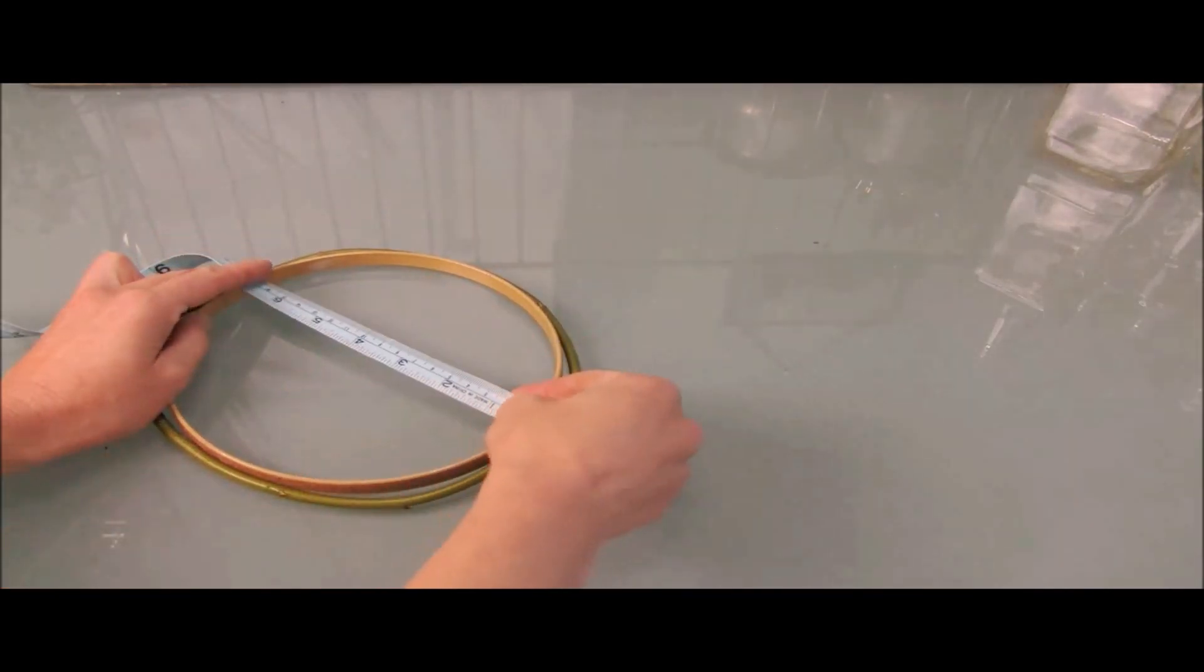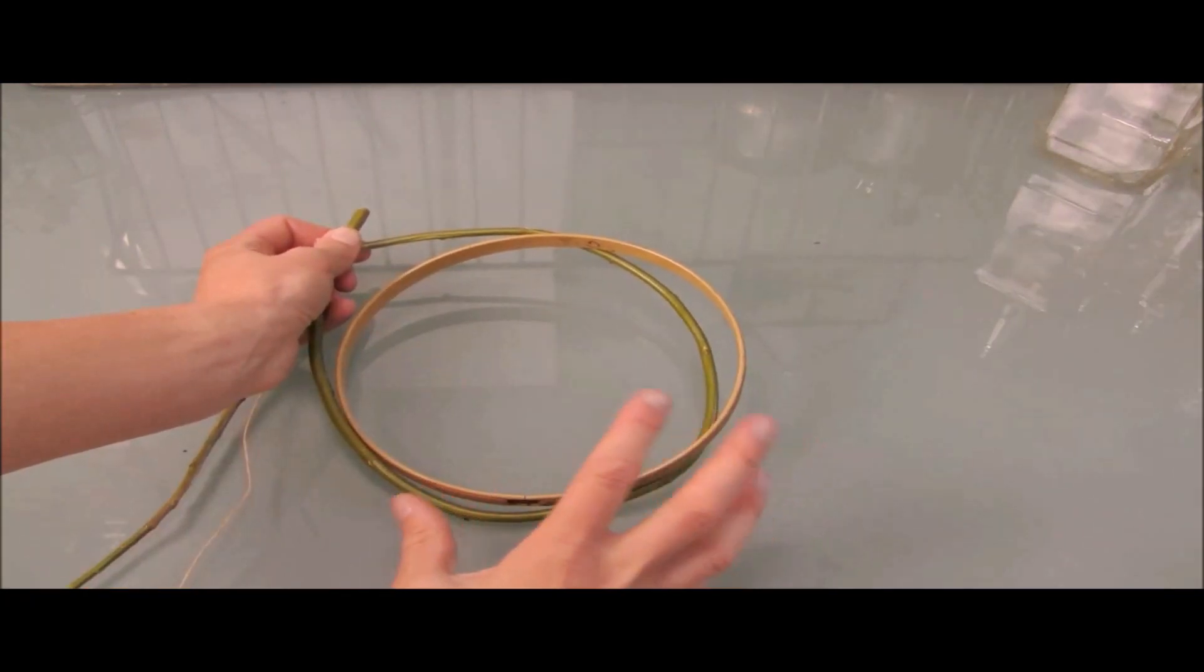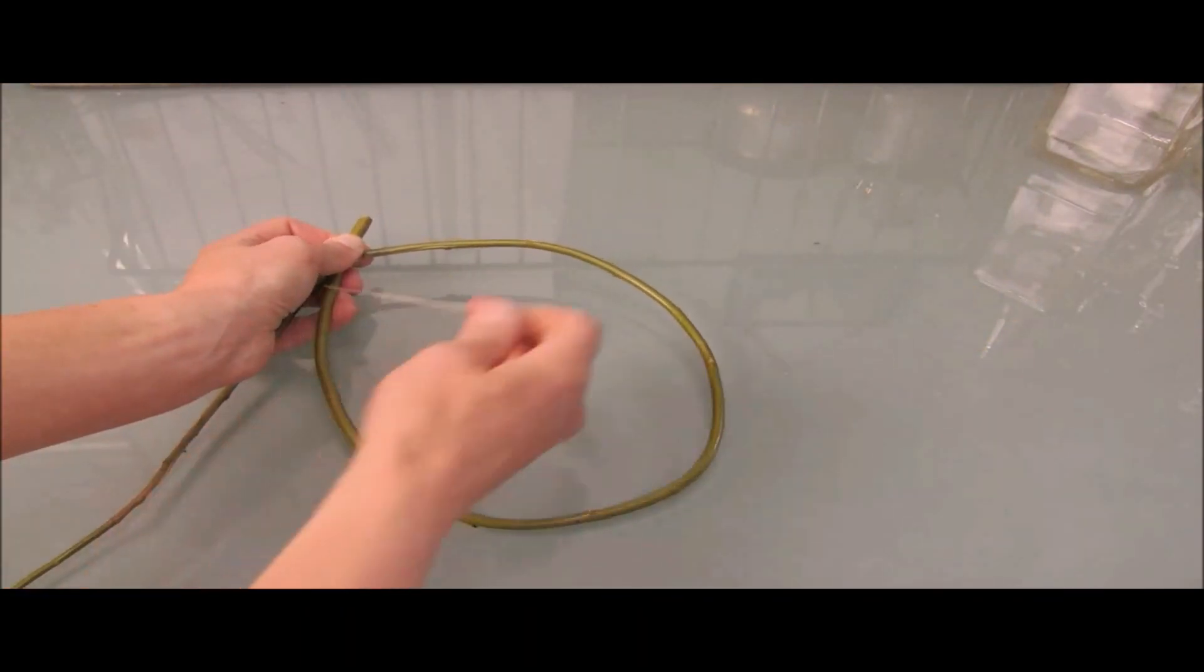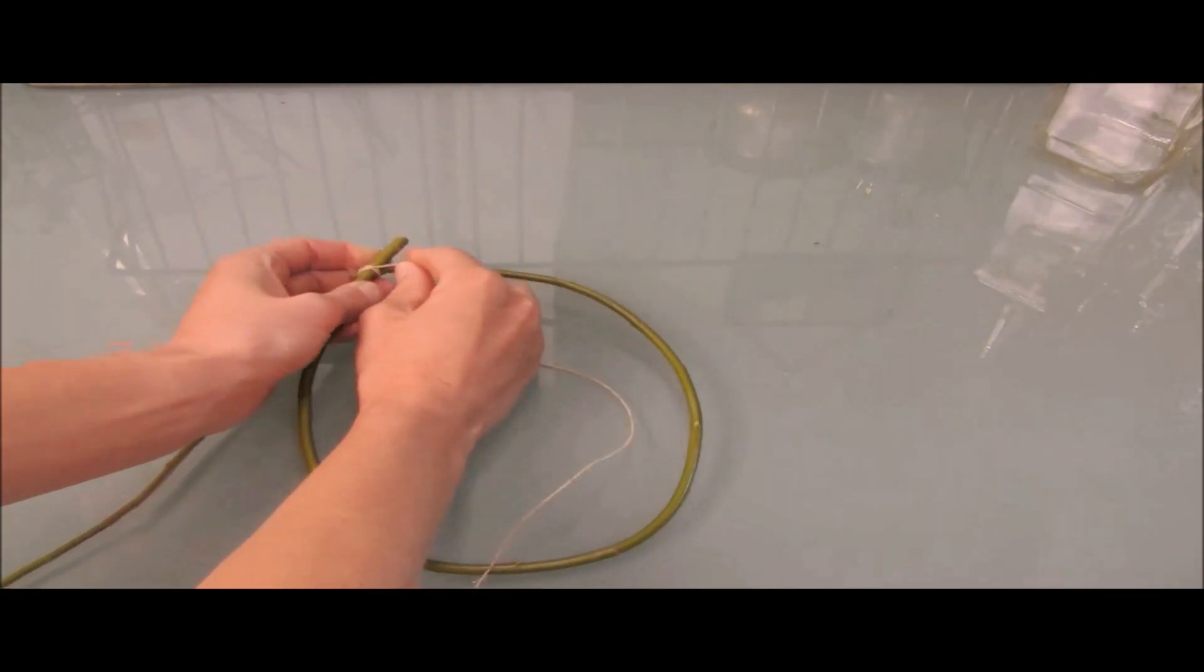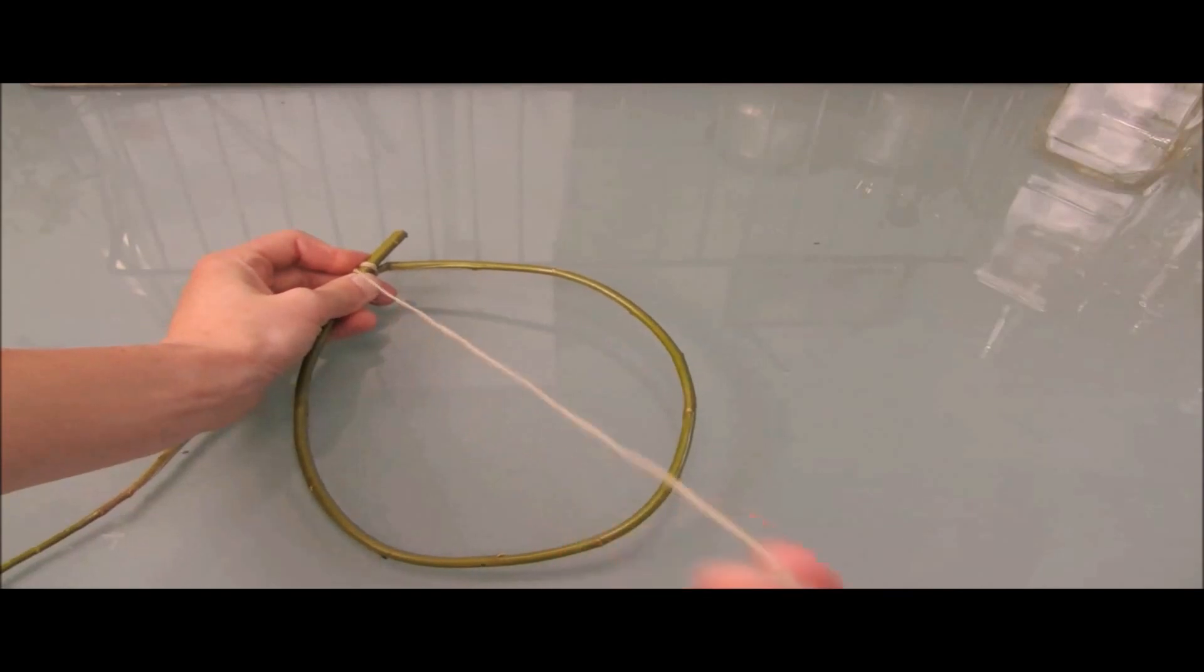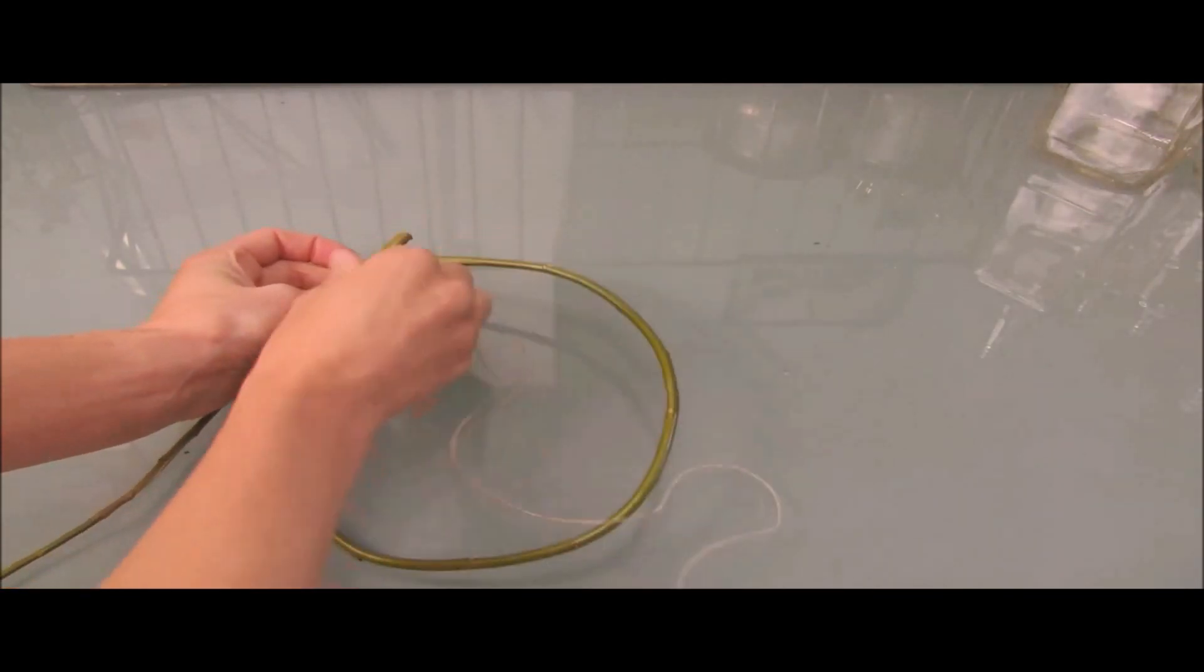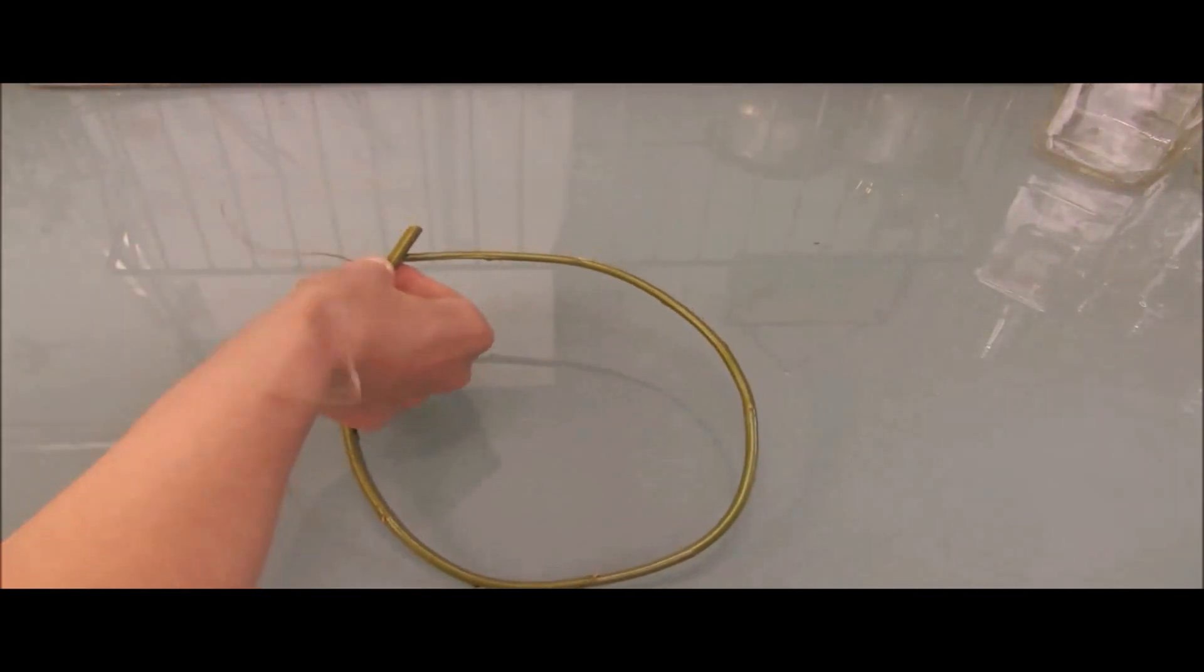So since this embroidery hoop is 7 inches across, I'm going to go ahead and use it as my template. Now that I have my basic size and dimensions, I'm going to remove the hoop, and I've tied one first knot with this hemp thread, so I've tied my first knot with the hemp thread, and then I'm just going to go ahead and wrap it around.